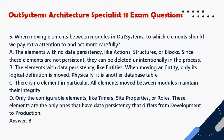Question 5. When moving elements between modules in OutSystems, to which elements should we pay extra attention to and act more carefully? a. The elements with no data persistency, like actions, structures, or blocks. Since these elements are not persistent, they can be deleted unintentionally in the process. b. The elements with data persistency, like entities. When moving an entity, only its logical definition is moved; physically, it is another database table. c. There is no element in particular — all elements moved between modules maintain their integrity. d. Only the configurable elements, like timers, site properties, or roles. These elements are the only ones that have data persistency that differs from development to production. Answer: B.